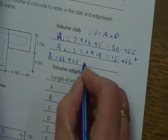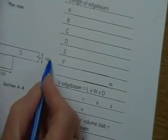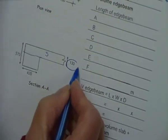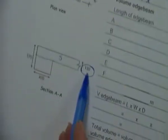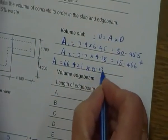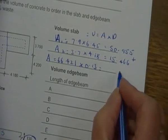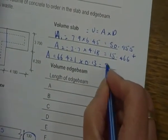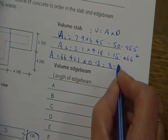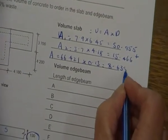Area 1 plus area 2, we're going to get an answer of 66.421. Now that is only my area. We have to now times that by the depth for the slab, and the slab depth is 0.13.